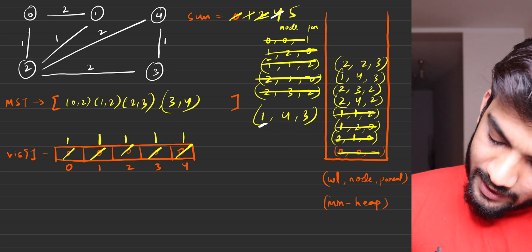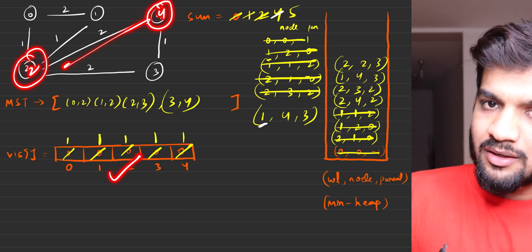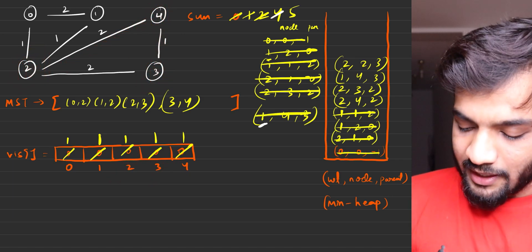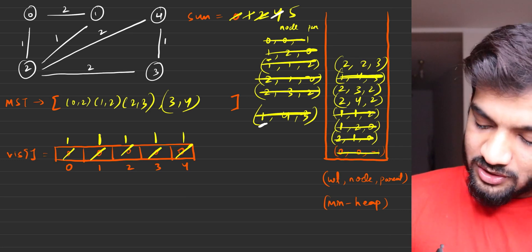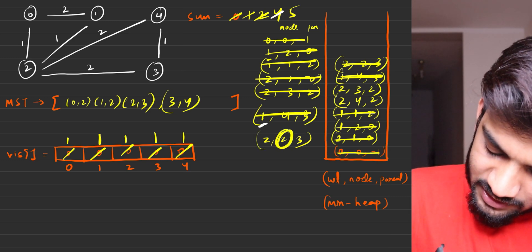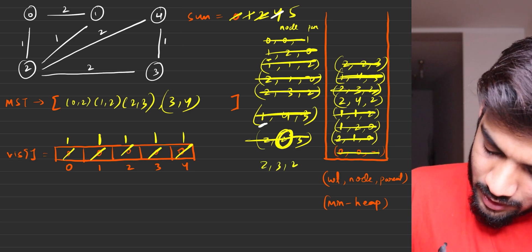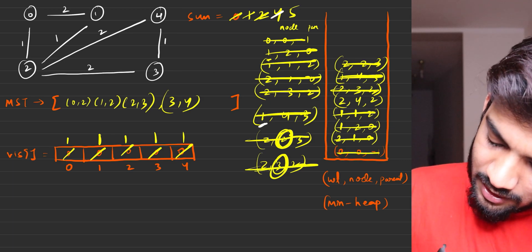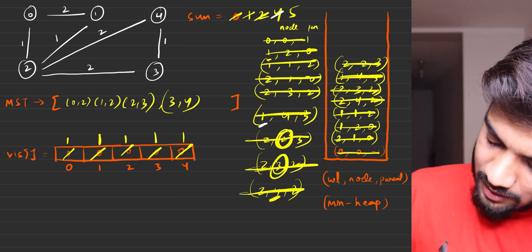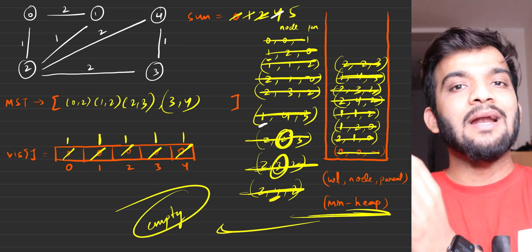Standing at node 4, adjacent node 2 is already visited, adjacent node 3 is already visited — no operations needed. The remaining elements in the heap: (2, 2, 3) — node 2 already visited, skip; (2, 3, 2) — node 3 already visited, skip; (2, 4, 2) — node 4 already visited, skip. The minimum heap is empty, so the algorithm terminates.